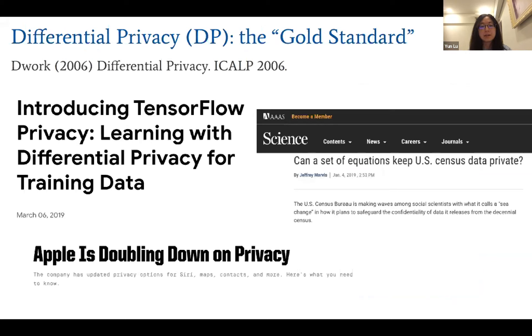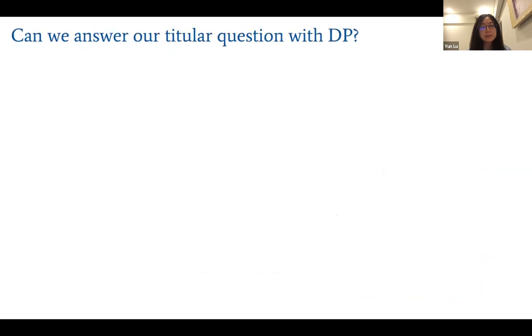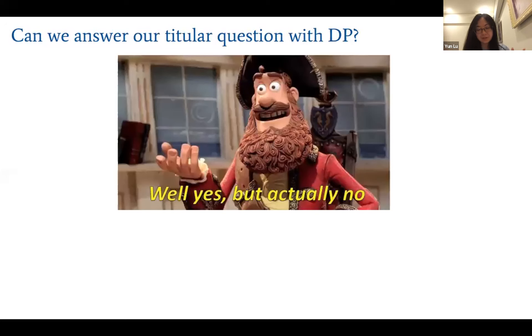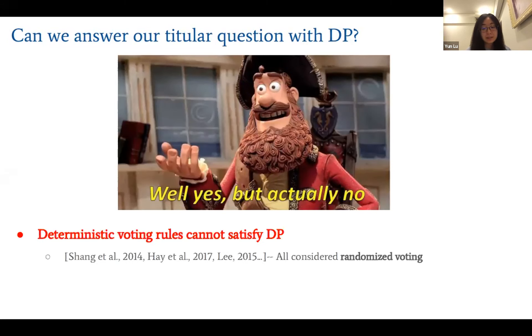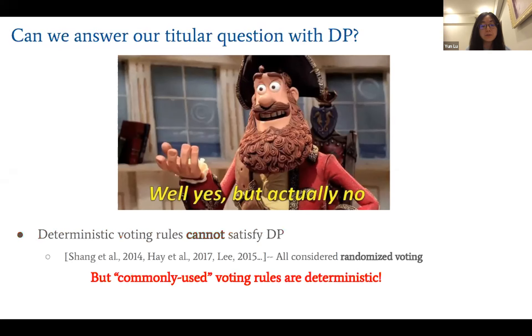Unfortunately, DP can only be used to study randomized voting rules — deterministic voting rules cannot satisfy DP at all. All previous works in this area considered DP with respect to randomized rules. But commonly used voting rules are usually deterministic — you wouldn't want the next president decided by a coin flip.